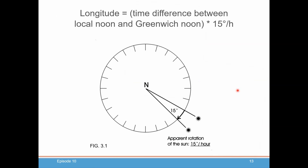So we know that the Sun, represented here, moves around the Earth at about 15 degrees an hour. It has to go all the way around the Earth — 360 degrees in 24 hours — and that turns out to be 15 degrees per hour.